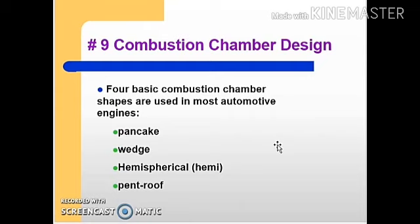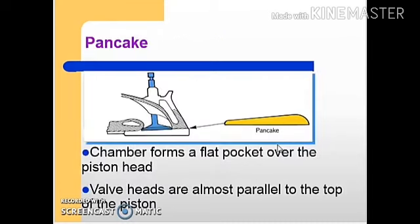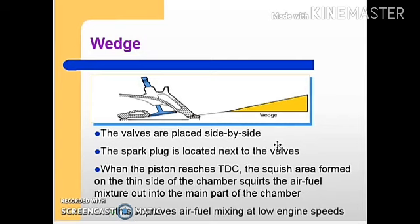Classification based on combustion chamber design: four basic combustion chamber types are used in most engines — pancake, wedge, hemispherical, and pent-roof. The pancake type combustion chamber forms a flat pocket over the piston head, with the valve heads almost parallel to the top of the piston. In the wedge type combustion chamber, the valves are placed side by side and the spark plug is located next to the valves. When the piston reaches TDC, the squeeze area squirts the air-fuel mixture into the main part of the chamber, improving the mixture at low engine speeds.